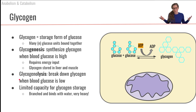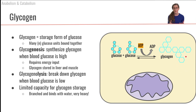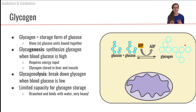We can store glucose as glycogen, so we always have some glucose available. However, we have a limited capacity of glycogen storage. The reason is that glycogen is a branched compound made of glucose, and glucose is a hydrophilic, water-loving compound. Water binds with glycogen, making it really heavy. So we can't store a large amount of energy as glycogen because it would be too heavy for our bodies.